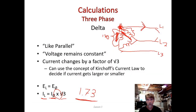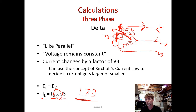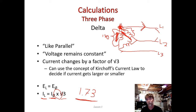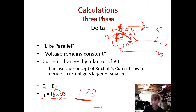So that's our delta connection — it's like parallel. The voltage in the phase and the voltage out on the line are the very same, but the current in the phase is root 3 less than the current we measure out on the line. That's delta. Now let's try Y.